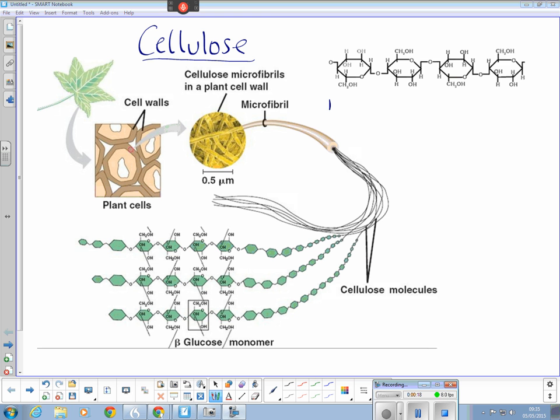We can see up here in the top left, beta glucoses joining together to form a straight chain. The bonds that form between them are glycosidic.